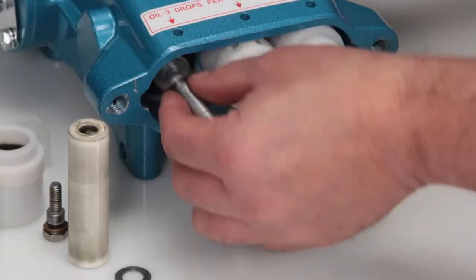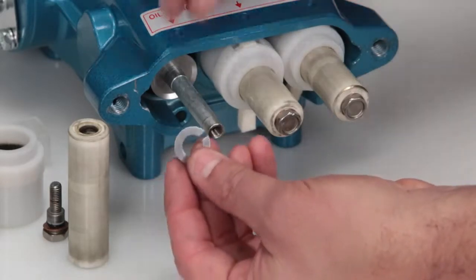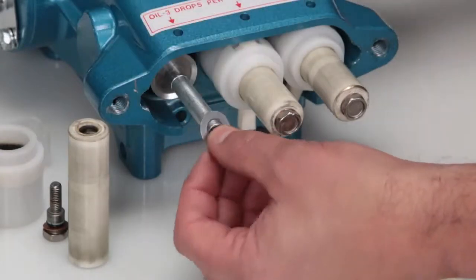To reassemble, install the barrier slinger with the dish side facing away from the crankcase. Next, install the keyhole washer. The slot can face in any direction.